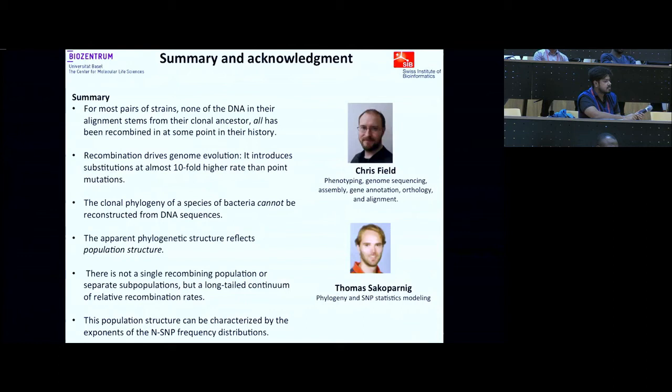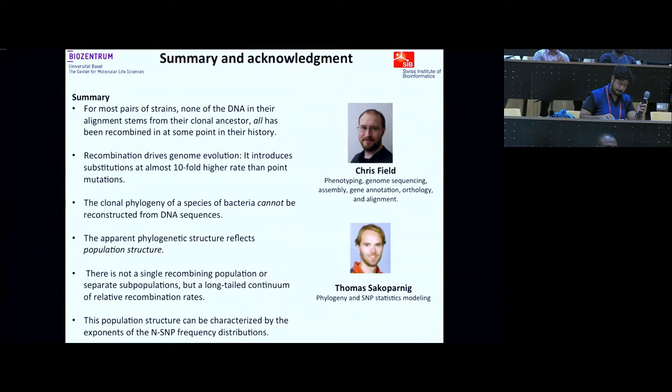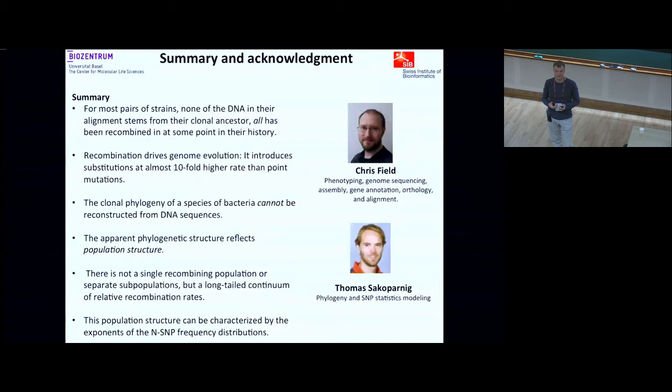Sometimes people suggest there are subsets of genes — the most conserved or essential genes — which are not hit by recombination, and you can make the tree from those. But we don't find any evidence that this is true. It looks to us like every region of the genome is hit — we can't find any regions that are not hit by recombination.